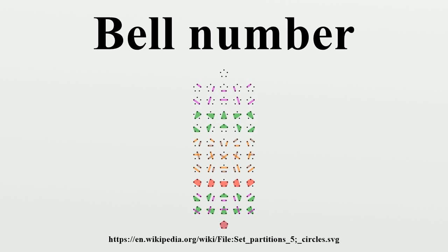The Bell numbers also count the rhyme schemes of an N-line poem or stanza. A rhyme scheme describes which lines rhyme with each other, and so may be interpreted as a partition of the set of lines into rhyming subsets. Rhyme schemes are usually written as sequences of Roman letters, one per line, with rhyming lines given the same letter, and the first lines in each rhyming set labeled in alphabetical order. Thus, the 15 possible four-line rhyme schemes are AAAA, AAAB, AABA, AABB, AABC, ABBA, ABBB, ABBC, ABCA, ABCB, ABCC, and ABCD.